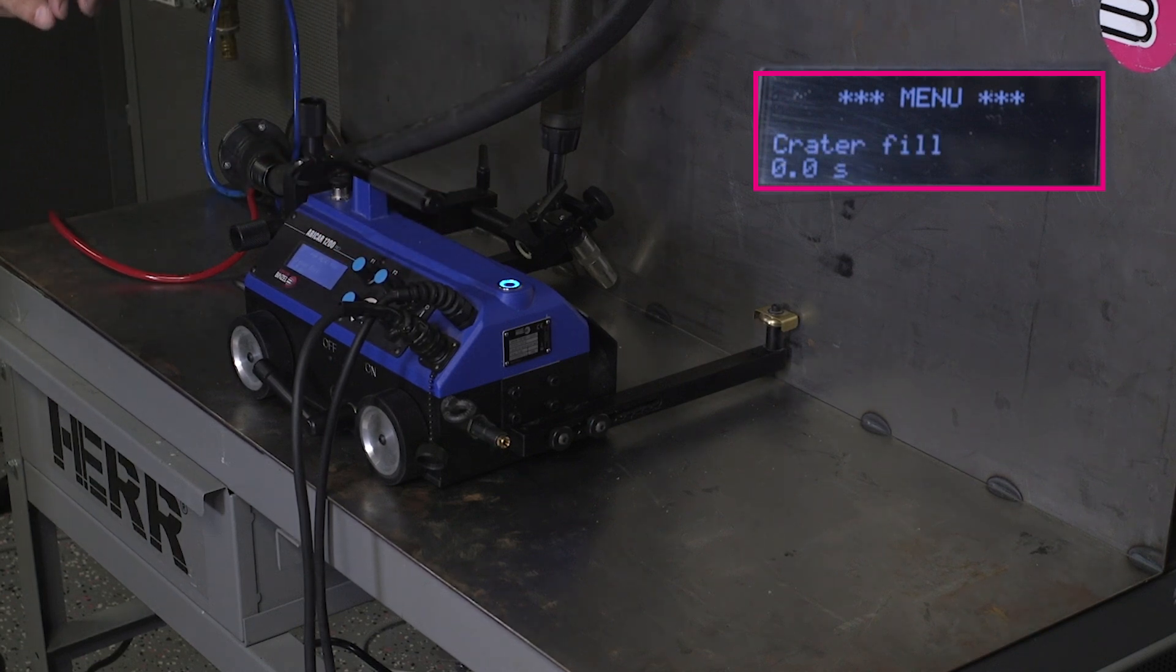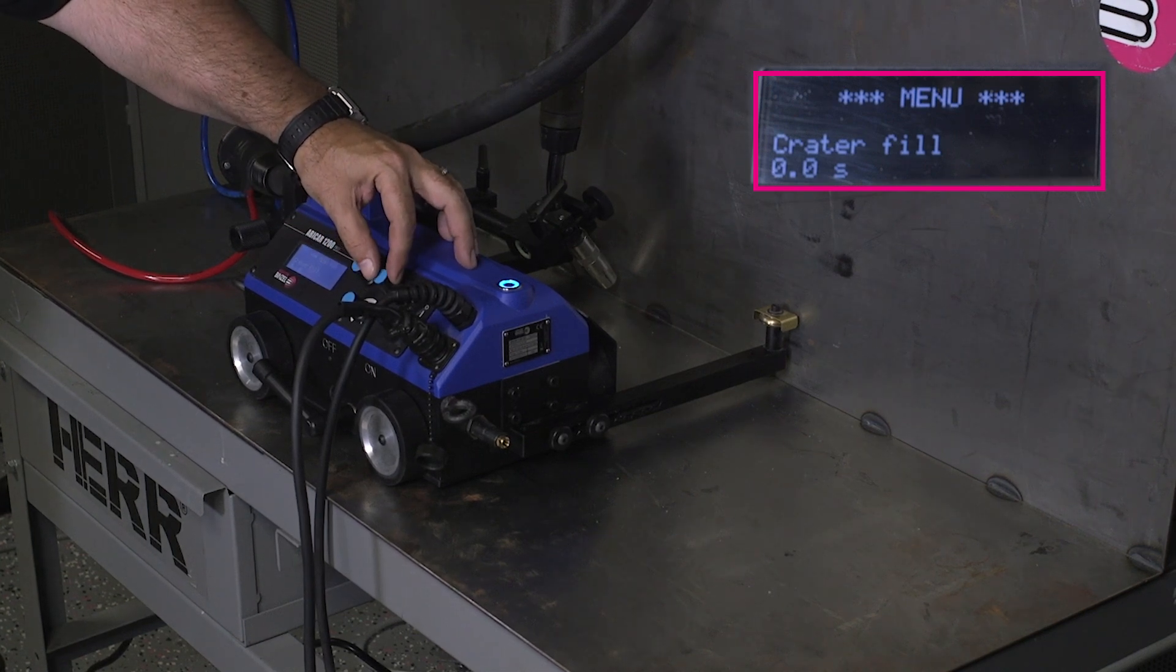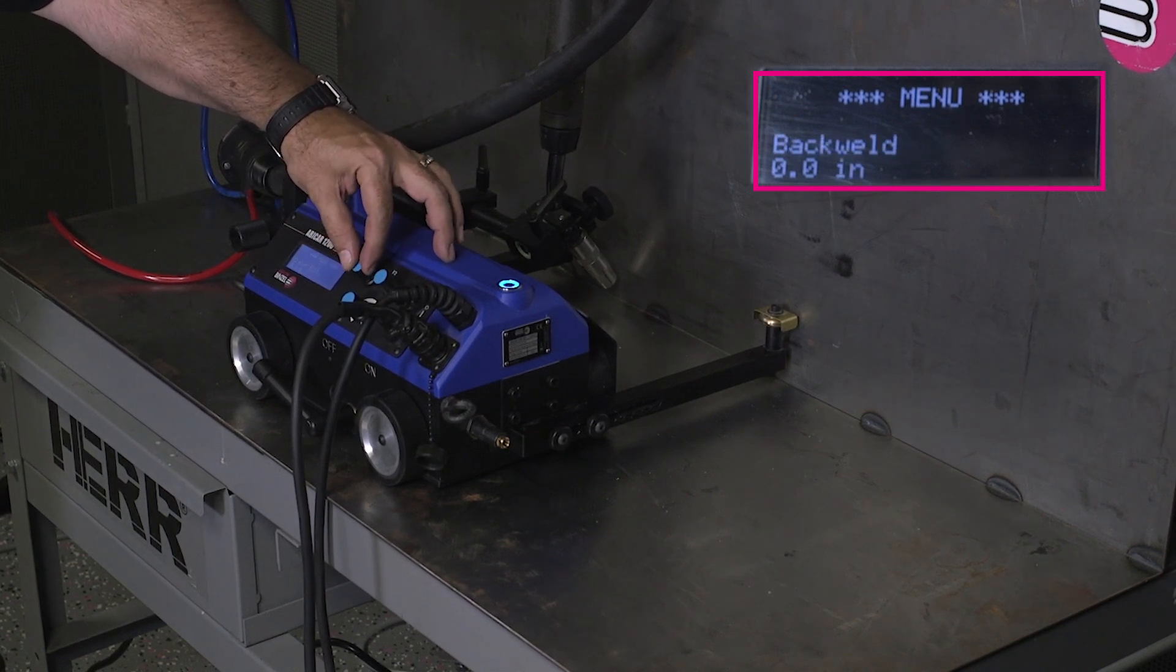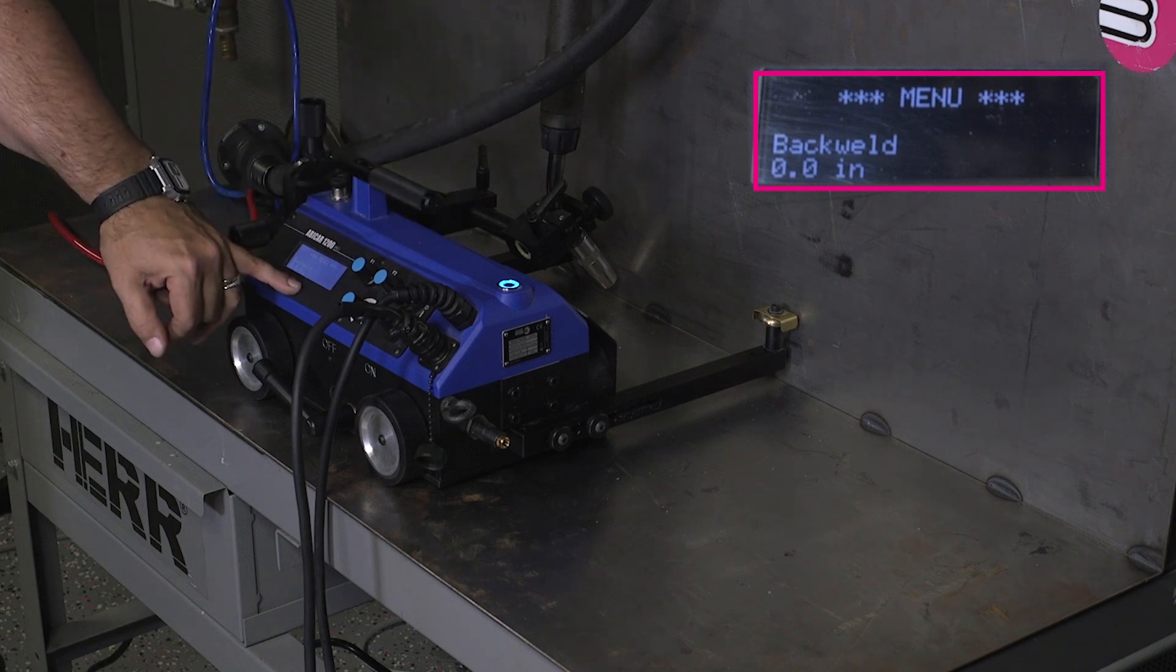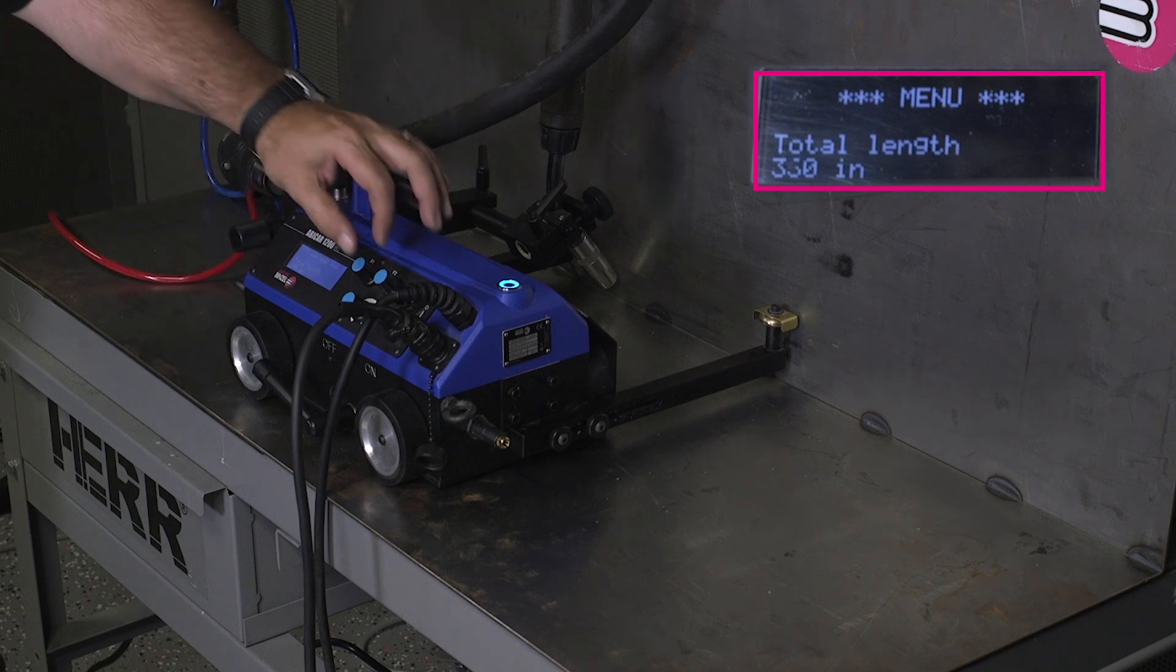We're going to ask for a crater fill. At the end of the weld, do we want it to stop? We're going to say no on this one. We can actually do a back step, but we're going to say zero on this one. Total weld length, we're going to roll that all the way up to infinite.